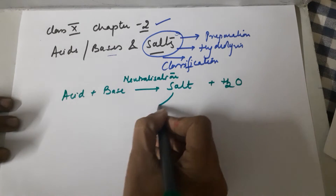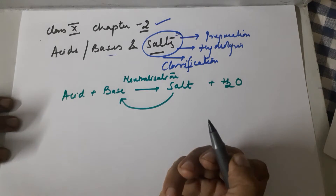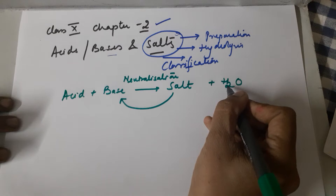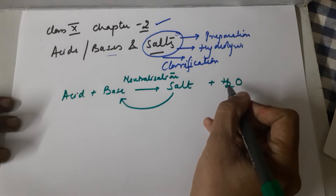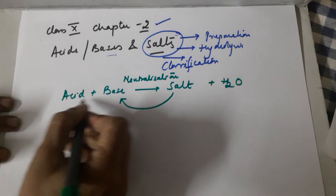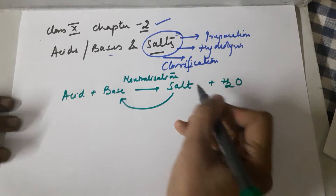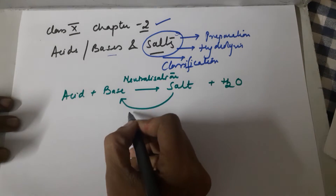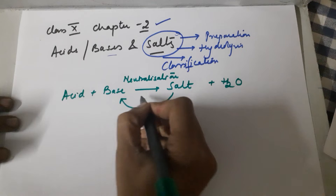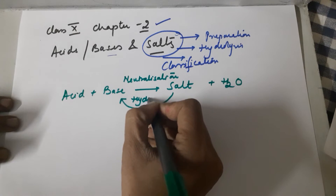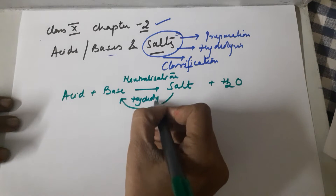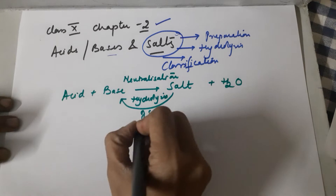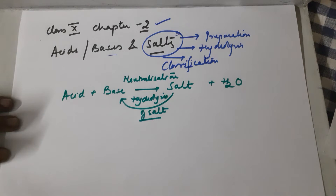Now, what if the reaction goes in the reverse direction? That is, you have a salt and you add water to it — what would you get? You should get back the acid and the base from which the salt was derived. This reverse reaction is called the hydrolysis of a salt.